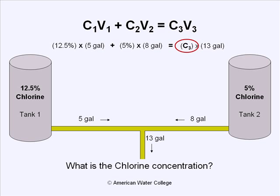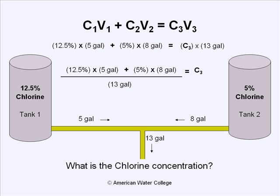We need to solve for this final concentration. To do that, we'll use what we call the diagonal rule — it's the same as dividing both sides by 13 gallons so that the C3 value will be alone. We can rewrite the formula with 12.5 times five added to five times eight gallons on top, divided by 13 gallons.